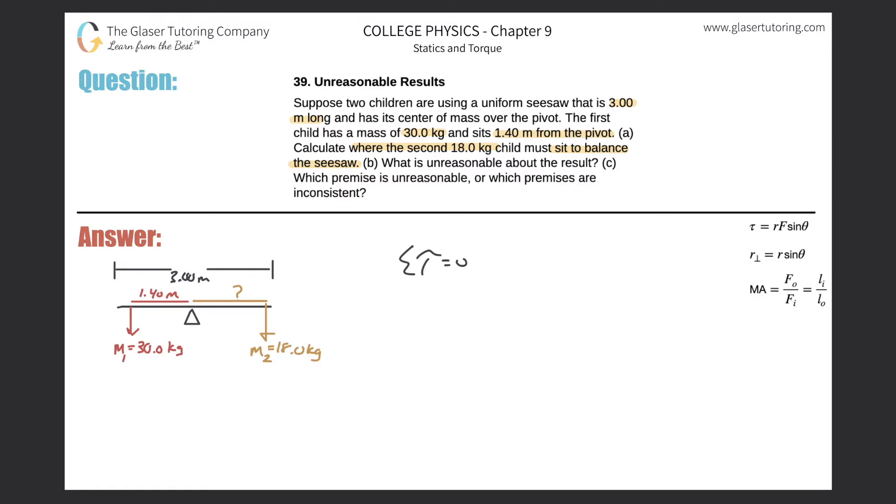We have to consider which one's positive which one's negative. This particular force would rotate the bar counterclockwise therefore this is positive and that makes this one negative. So we can say that the torque of one minus the torque of two should equal zero. Doing a little algebra that means the torque of one should equal the torque of two.